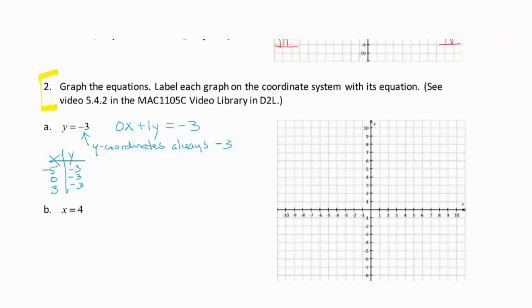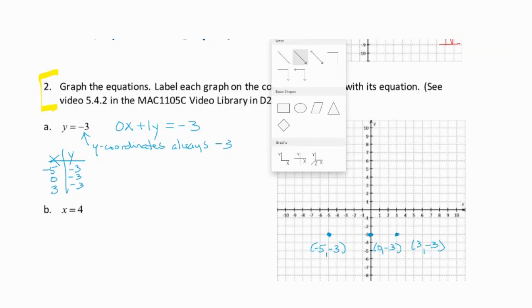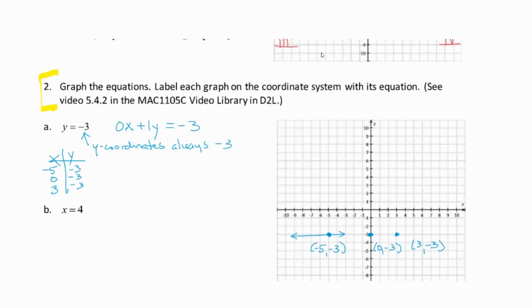So negative 5, 3 for example would be here in the second quadrant. 0, oops, it's supposed to be negative 3, not 3. My bad. Let's go down. It's in the third quadrant actually. Negative 5, negative 3 down here. 0, negative 3 on the y axis and 3, negative 3. No matter which points you plot, if they all have y coordinates of negative 3, then they're going to form a horizontal line.